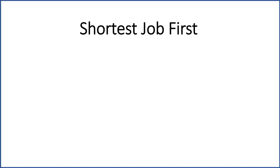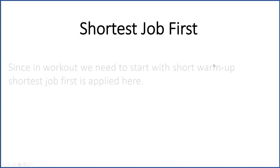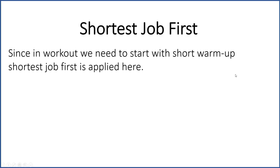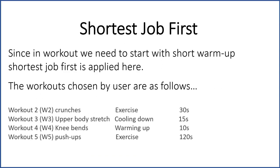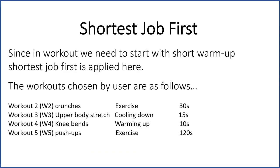Hello, my name is Omar. I'll be walking you through process scheduling. First we start with Shortest Job First. Since in a workout we need to start with a short warm up, the Shortest Job First is applied here. The workouts chosen by the user are workout two, workout three, workout four, and workout five.